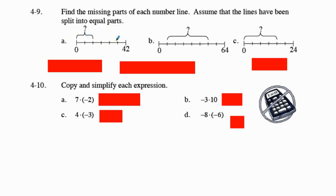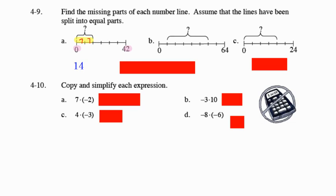Here you are going to figure out what is the length within that bracketed area. For work, I would want to see that you took 42 minus 0, which is 42, divided by 6 spaces. So we're going by 7s. That means this section has a length of 7, and so does the next one. So 7 plus 7 gives us a total length of 14.